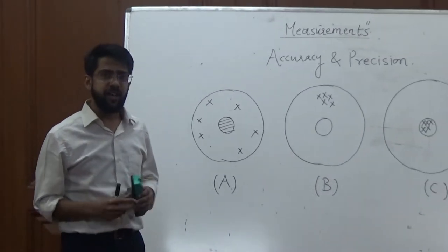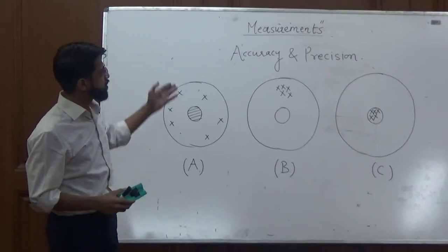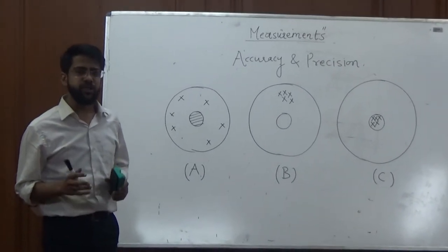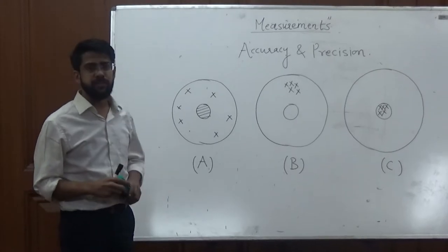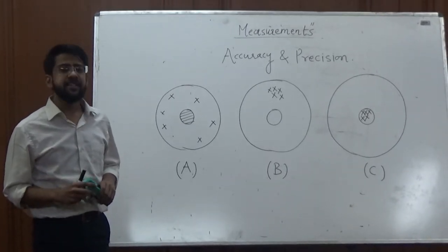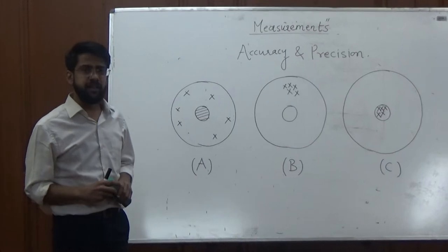In electrical engineering we often come across these two terms, accuracy and precision. Generally the notion is that these two terms mean the same thing, but it is not true. We can see accuracy and precision in two ways.